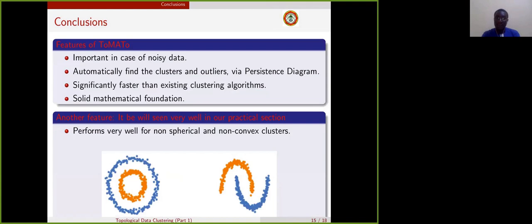Moreover, tomato is significantly fast as compared to classical clustering algorithms and has a very solid mathematical foundation. Another key feature of tomato is that it can enable us to cluster more complex shapes like this one.